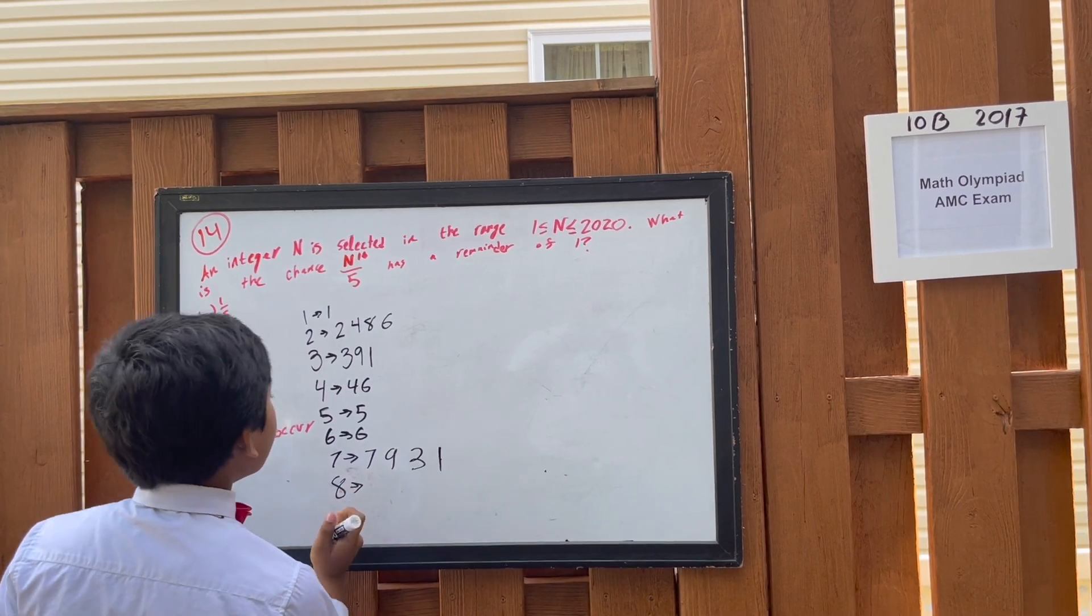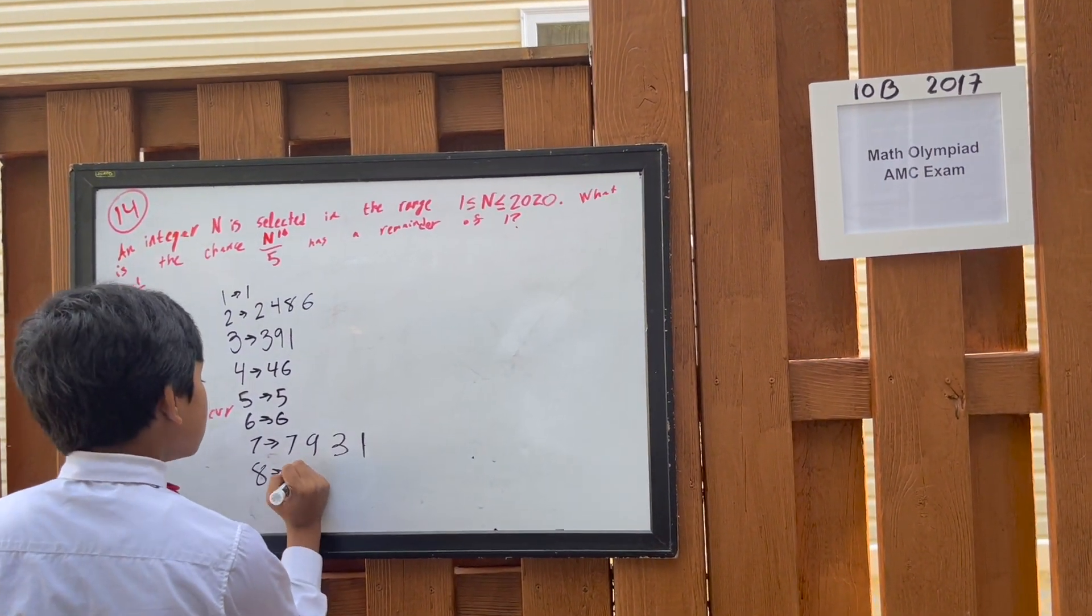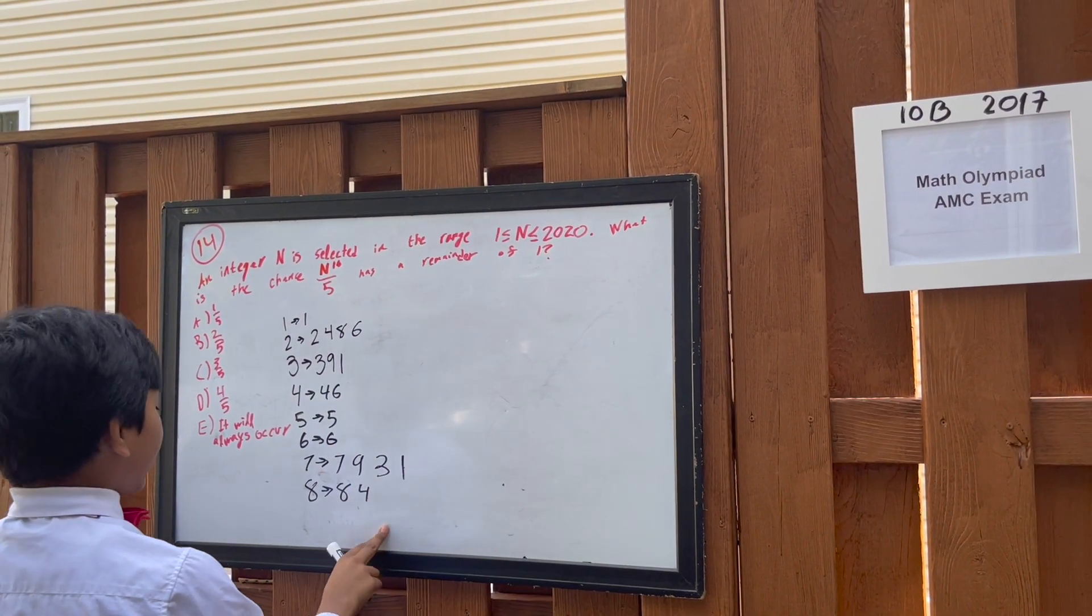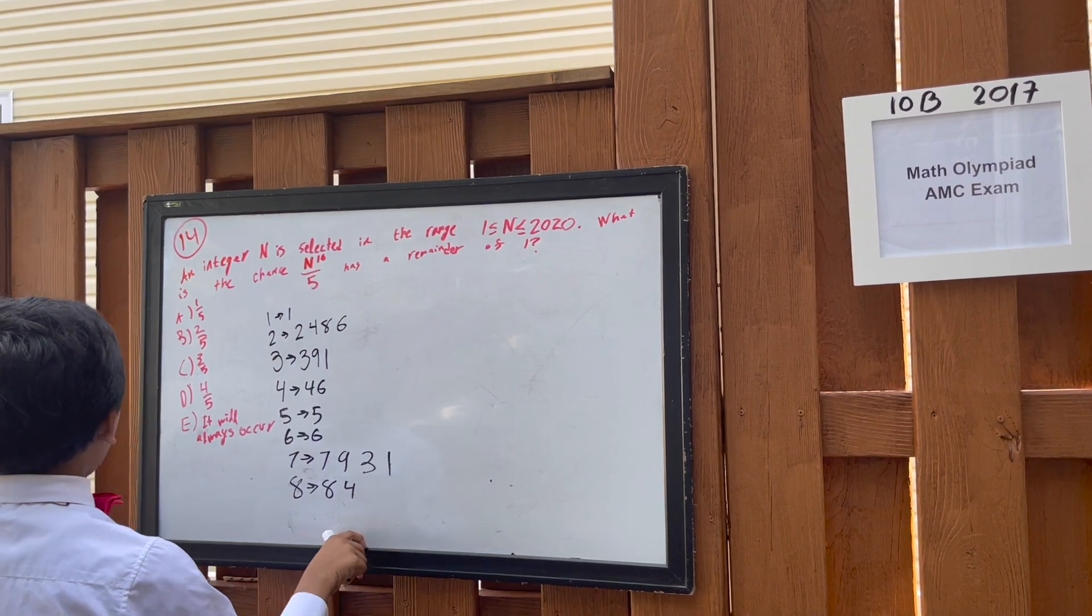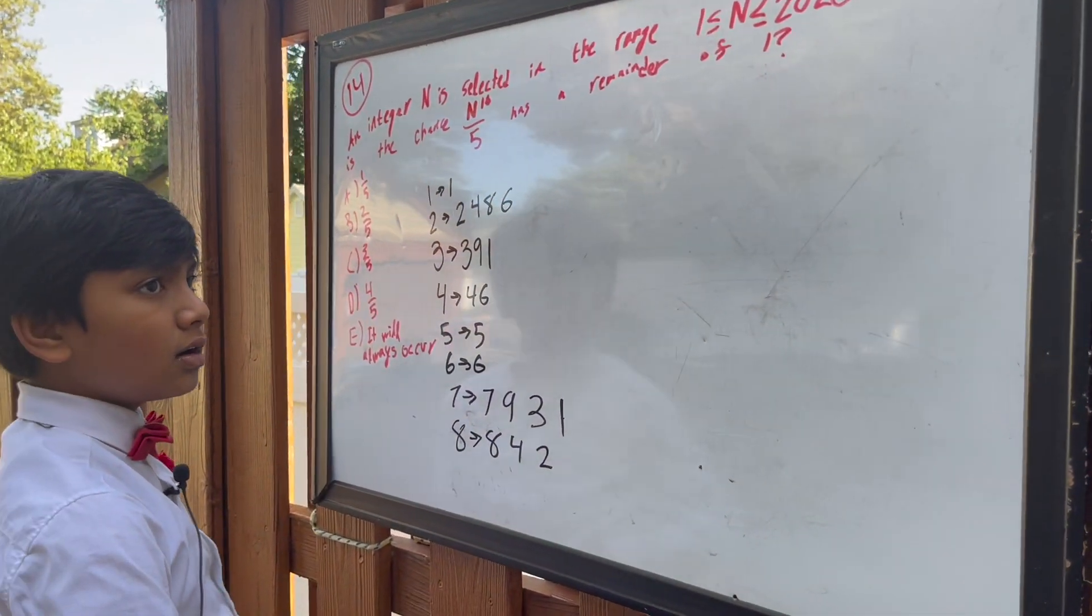And then you have 8, which is the same thing, but you skip even more. So you have 8, 4, and then 2, 6.